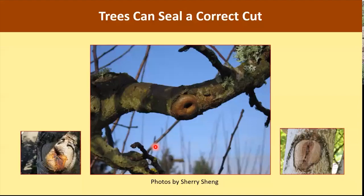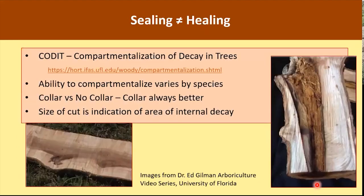The good news is trees can seal a correct cut. The bad news is sealing is different from healing. Just because a tree can seal a wound does not mean there is no internal injury. In fact, all cuts lead to decay — the question is how much. Research has shown that the larger the cut, the larger the area of decay, and the tree's ability to ward off decay varies by species.